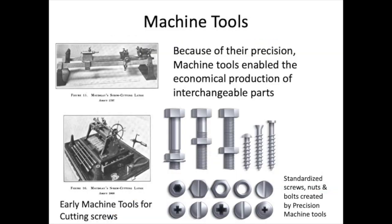Machine tools like these lathes made possible the production of standardized screws, nuts, and bolts. Because they were standardized, they could be used as interchangeable parts in building a wide variety of other goods. The humble screw is something we take for granted — we know that we can find the exact same one at any number of stores across the United States and throughout the world.